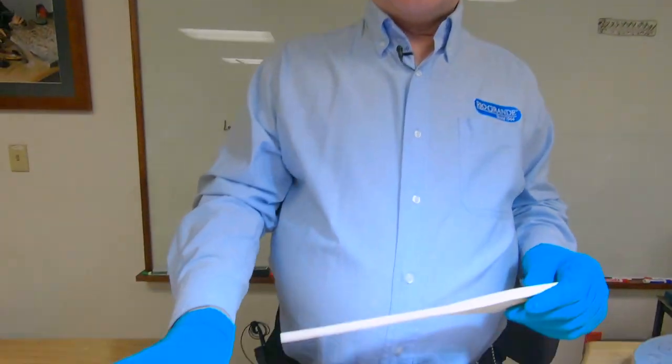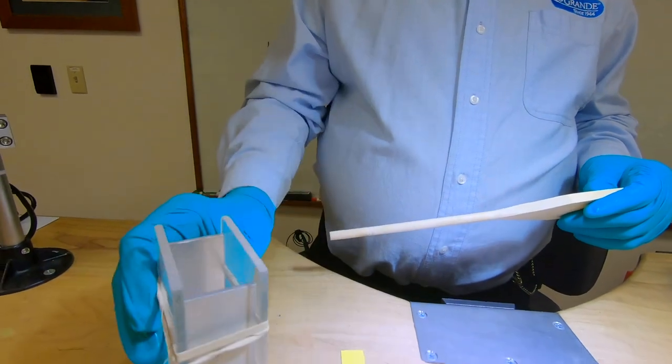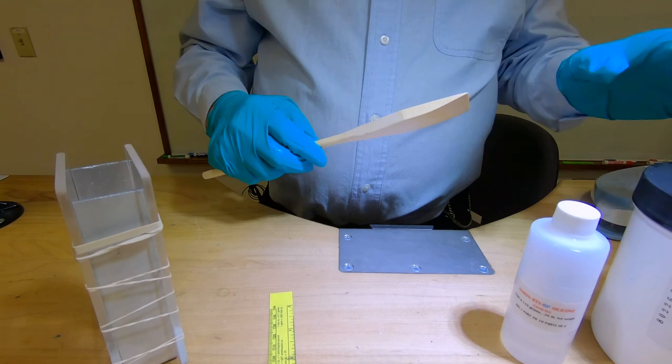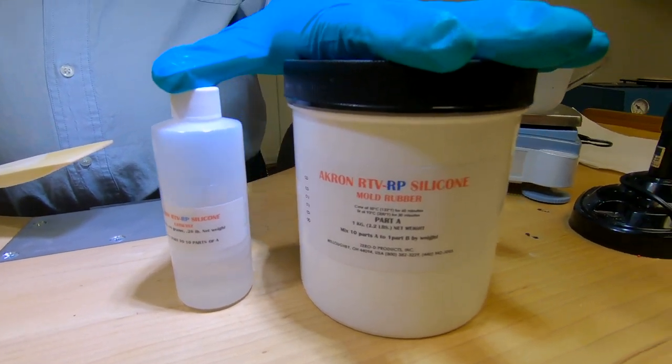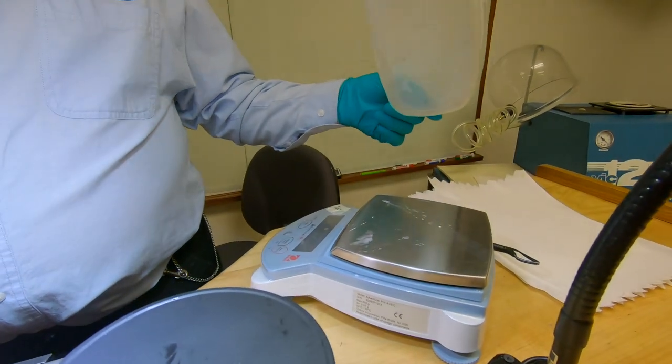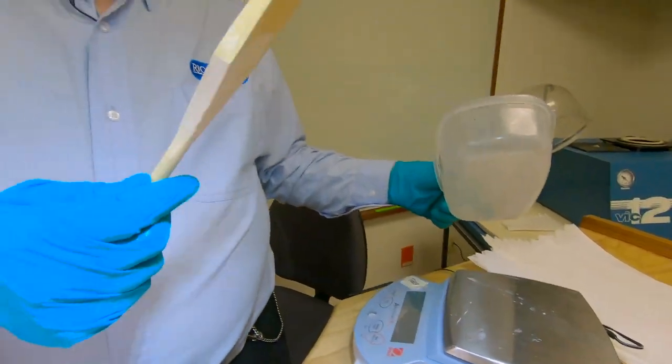So these are the materials you're going to need to make your RTV mold. You're going to need your model framed up, a ruler, the RTV material, the rubber, a mixing container, a scale, and a spatula.